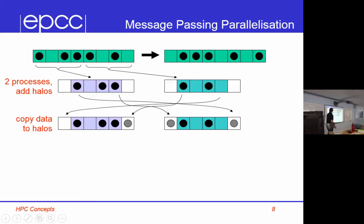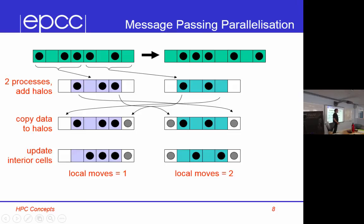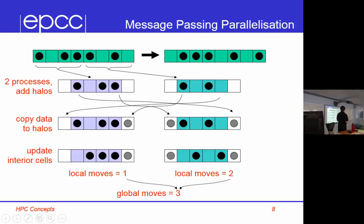Once updated, process one has one local move and process two has two local moves. I need to do a global reduction to add them together to get the global number of moves, which is three.